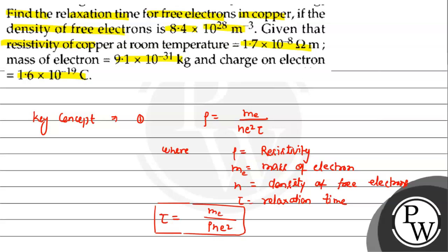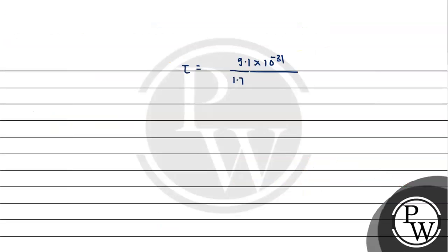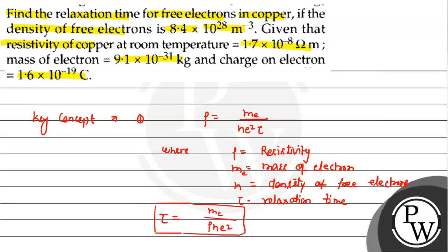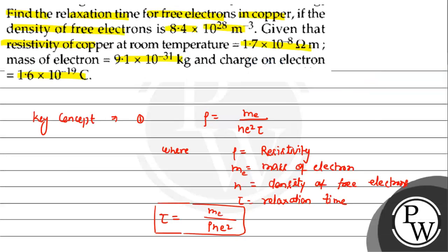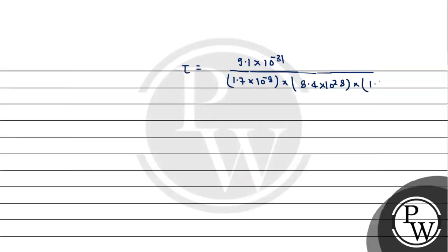Rho, the resistivity, is 1.7 × 10⁻⁸. N, the number of free electrons or density, is 8.4 × 10²⁸. And e square - e is the charge, 1.6 × 10⁻¹⁹, and we need to square it.